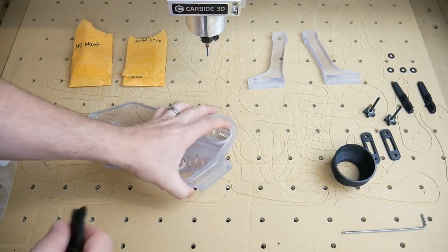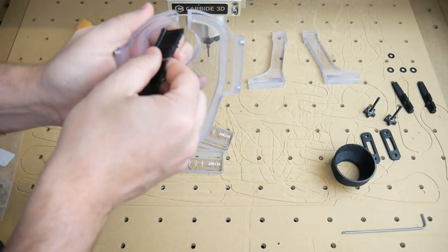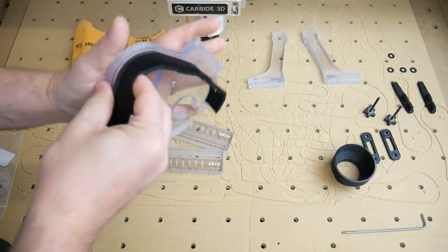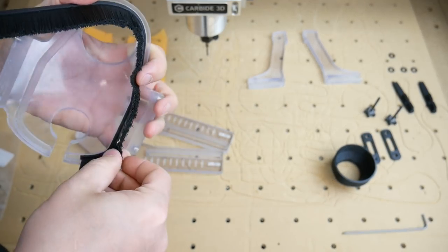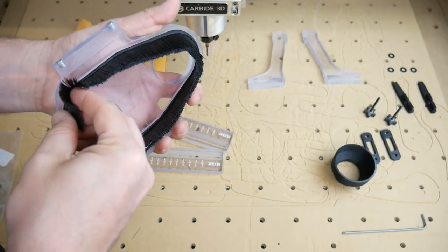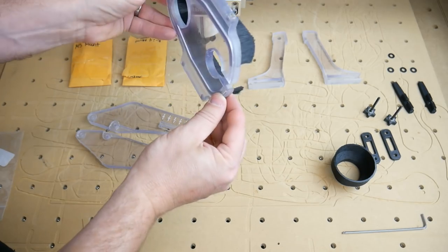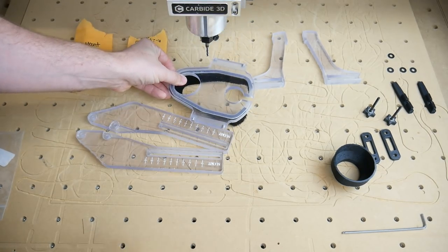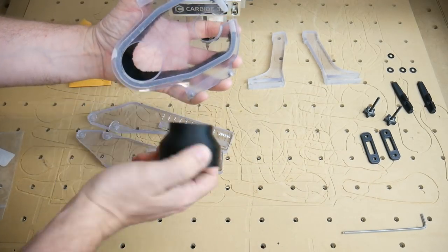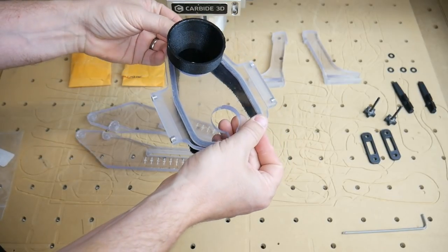Now we're going to take the brush and place it into the groove on the dust boot. We want it to angle in towards the center of the dust boot. We'll take the vacuum port and place it into the hole on top of the dust boot. It should be a friction fit, but if you want this to be a permanent fixture, use the same CA glue we used for the magnets and attach them together.